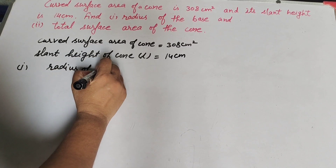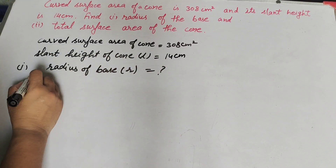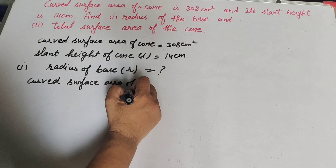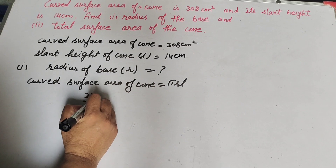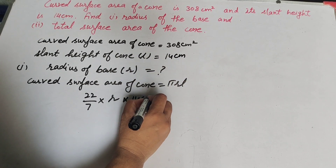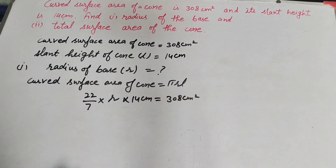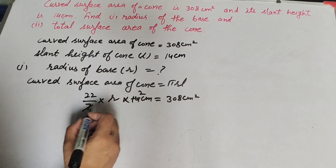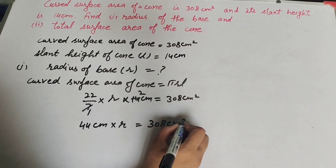We know the formula to find curved surface area of a cone: CSA = πrl, where π = 22/7, r is the radius we need to find, and l is the slant height = 14 cm. Setting this equal to 308 cm², since 14 and 7 are both divisible by 7 we cancel them: 22 × 2 = 44, so 44r = 308.